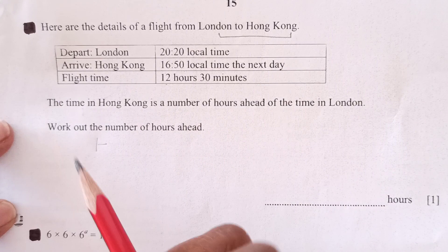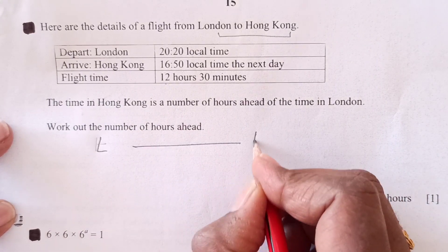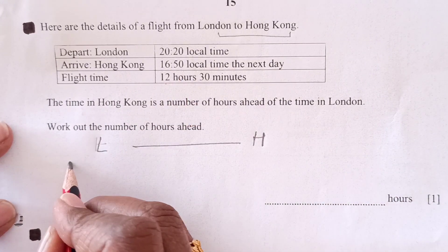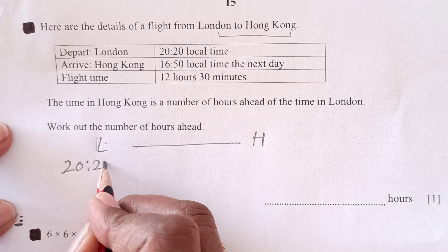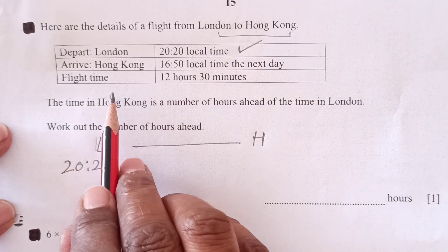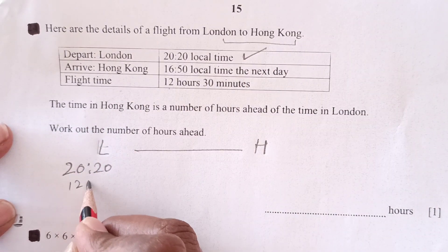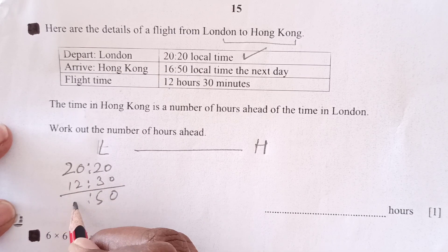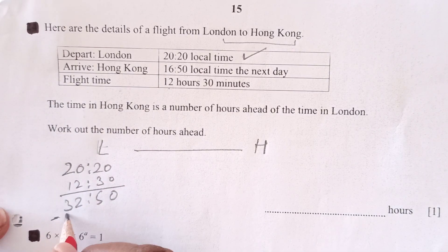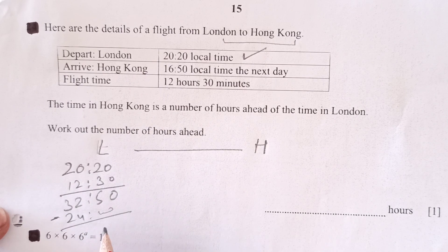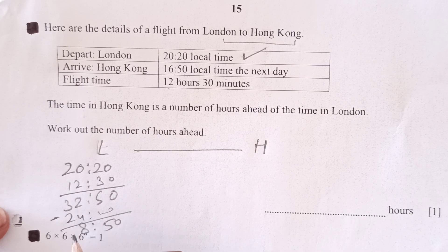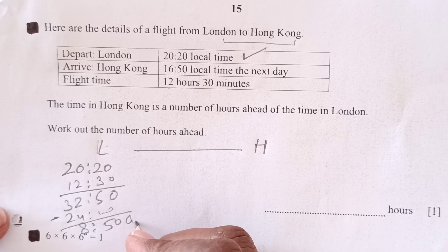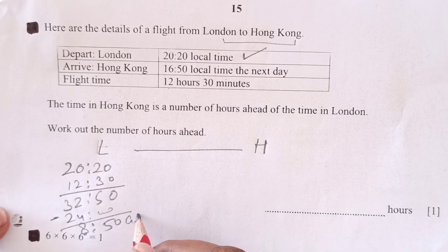So it's from London to Hong Kong. London departs at 20:20 and it takes time 12 hours and 30 minutes. So this will be 05 if you add, 32 minus 24 hours to it is going to be 08:50. 08:50, that is AM in the morning. But that is the time in London.